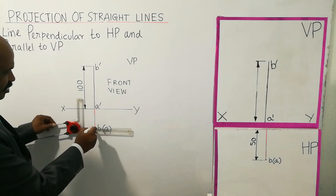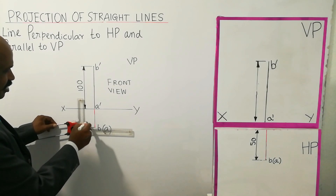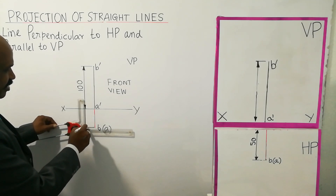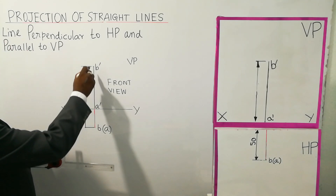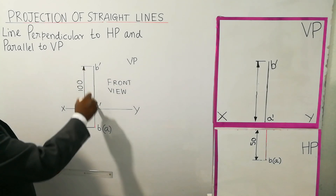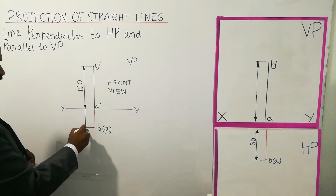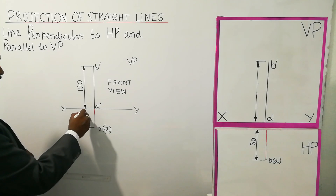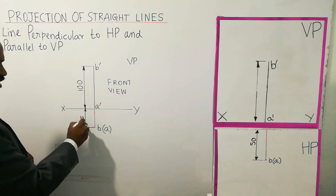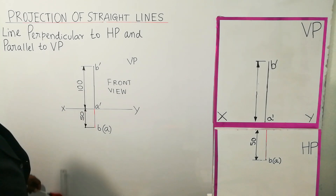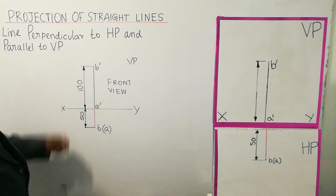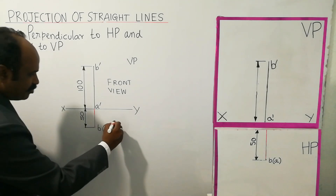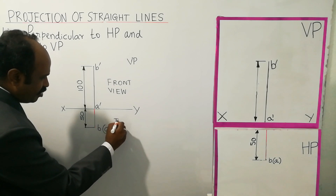Mark 50mm with the HB pencil. The object line is a thick line, whereas the dimension line is a thin line. The dimension is 50 and 100 in the diagram. This is the top view — the point is the top view.